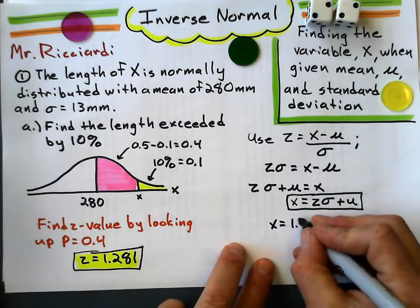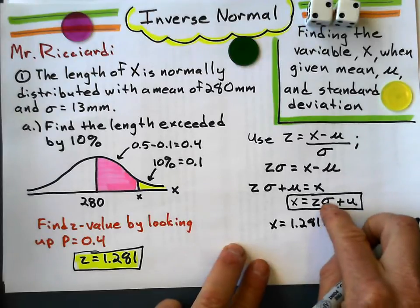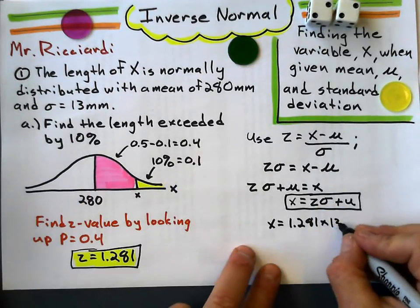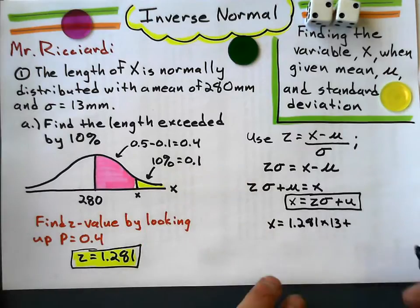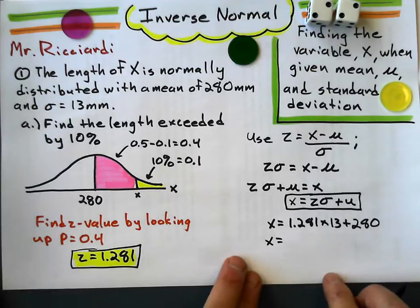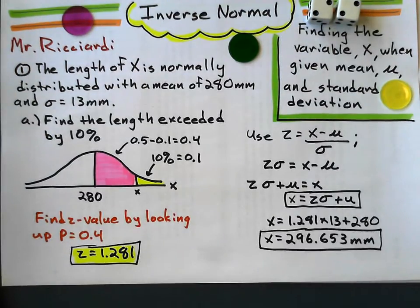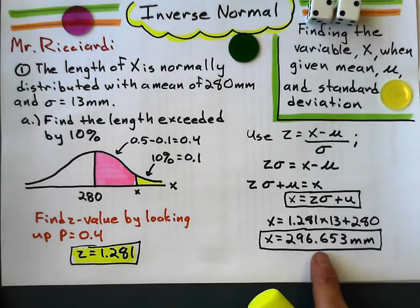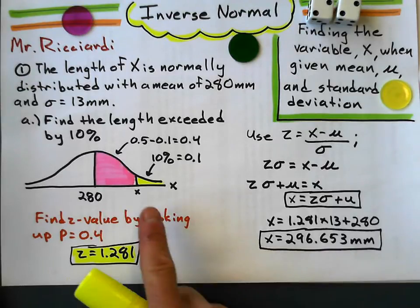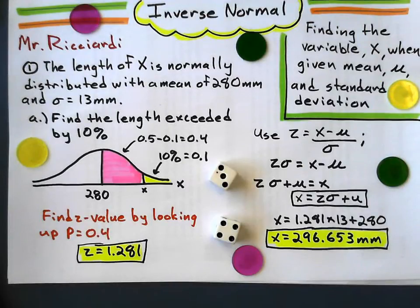It's Z value, 1.281, times my standard deviation, which is 13, plus my mean of 280. And that will give me the variable that I'm solving for, which in this case is 296.653 millimeters, to be exact. And so that's the length that 10% would be greater than, if this were normally distributed.